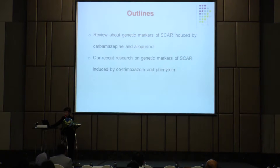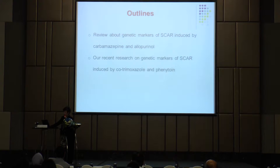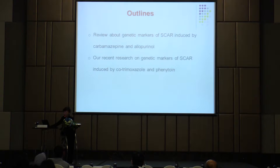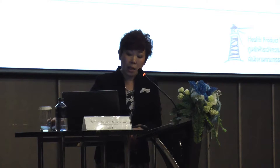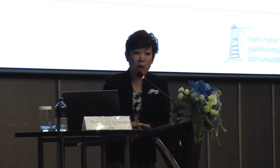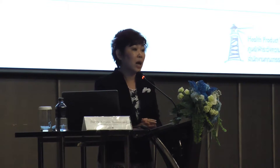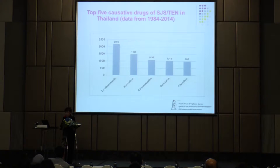The outline of my talk today: I will review a little bit on the SCAR induced by carbamazepine and allopurinol, which is mostly what Dr. Cholopat has already reviewed for you this morning. The second part of my talk, I would like to show you some of our recent research on genetic markers of SCAR induced by cotrimoxazole and phenytoin. As you have seen from Dr. Vimond this morning, the top five causative drugs of Stevens-Johnson syndrome and TEN in our Thai population are: number one cotrimoxazole, followed by allopurinol, carbamazepine, nevirapine, and phenytoin.